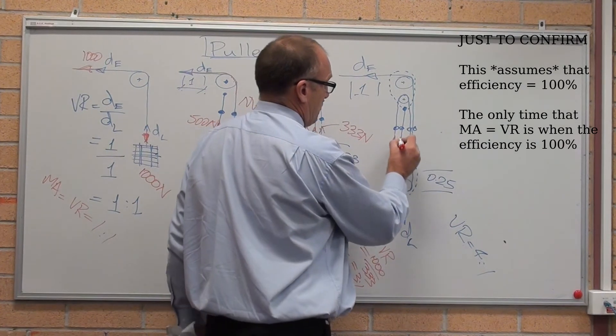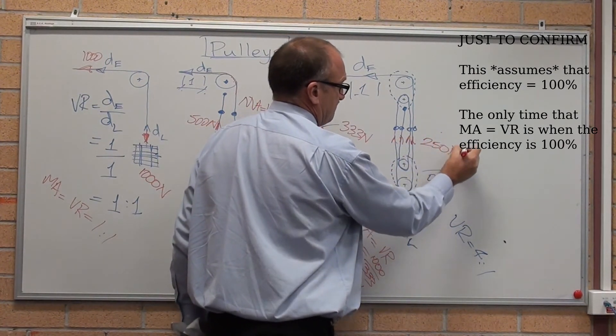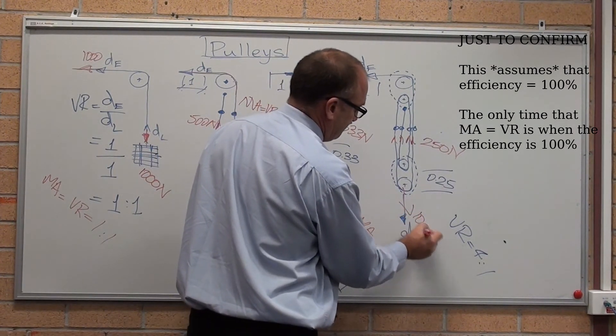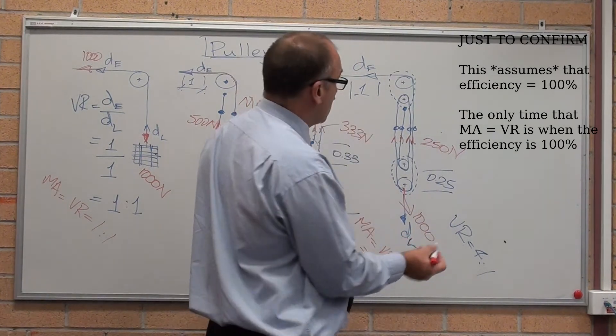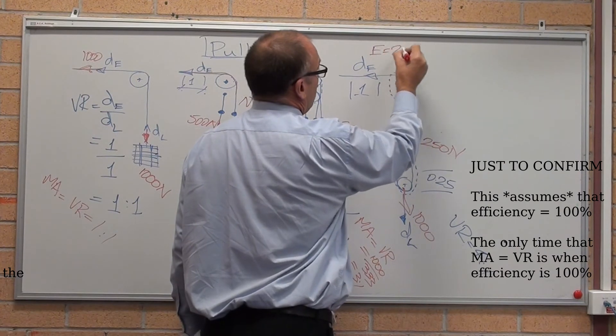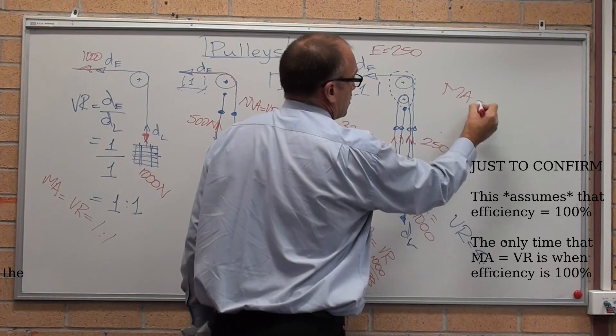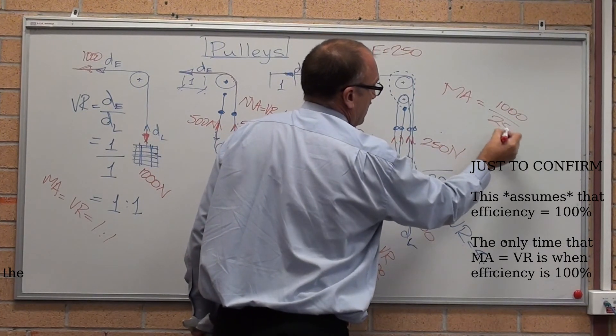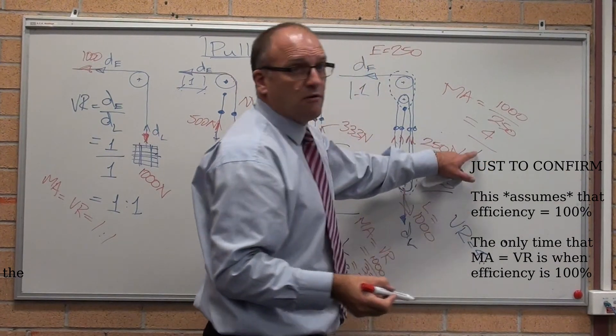Four ropes. Each rope is holding up 250 newtons. If that's 1,000 pulling down, four times 250 going up, 1,000 going down. The effort equals 250, load equals 1,000. Mechanical advantage equals 1,000 on 250 equals 4 as to one ratio.